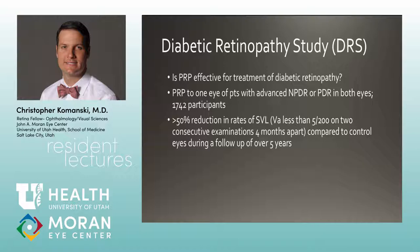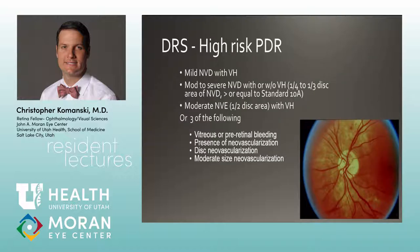The DRS 1972 asked: is PRP effective for diabetic retinopathy? PRP was applied to one eye of patients with advanced NPDR or PDR in both eyes. Severe vision loss was defined as visual acuity less than 5/200 on two consecutive exams four months apart. Nearly 2,000 patients were followed for five years, demonstrating greater than 50% reduction in the rate of severe vision loss — dramatic results for a working-age population.